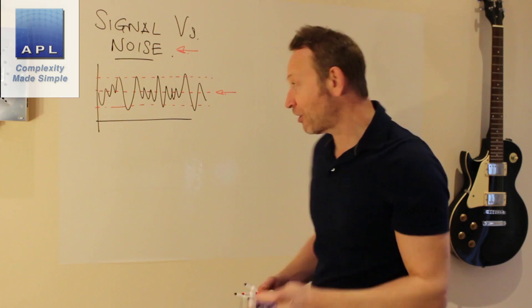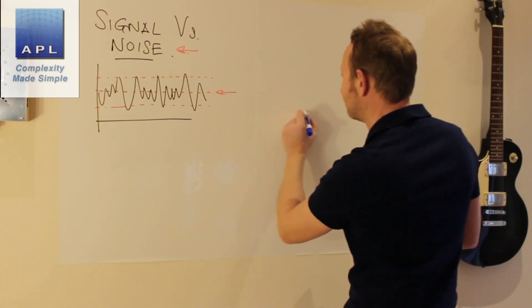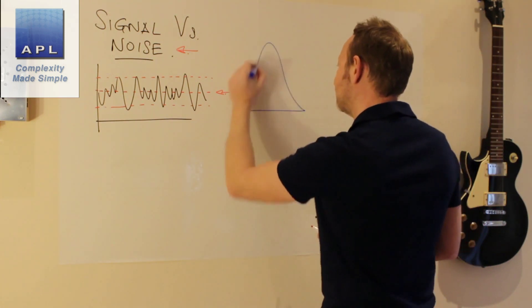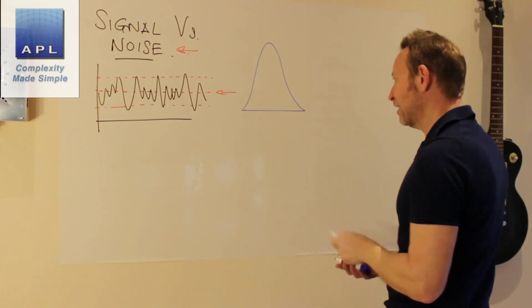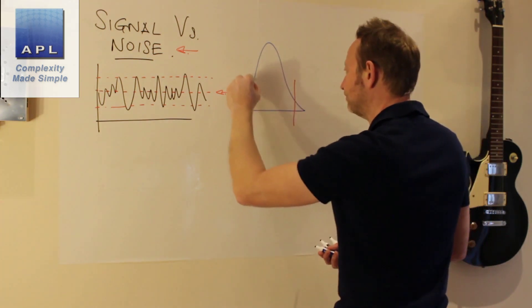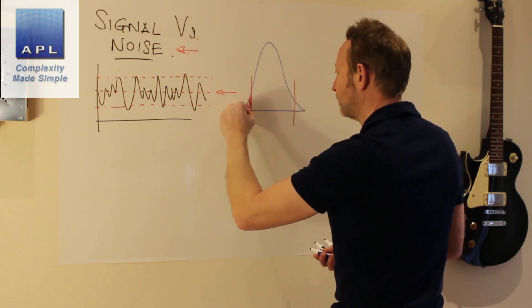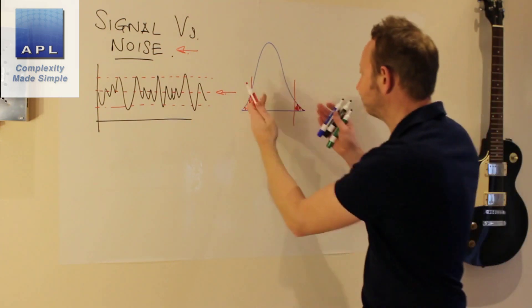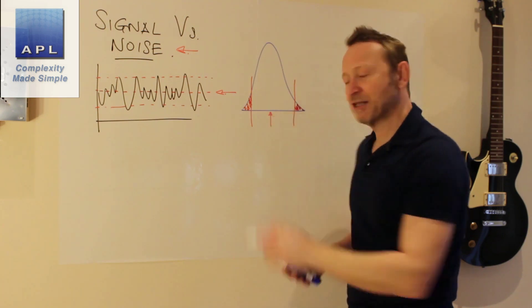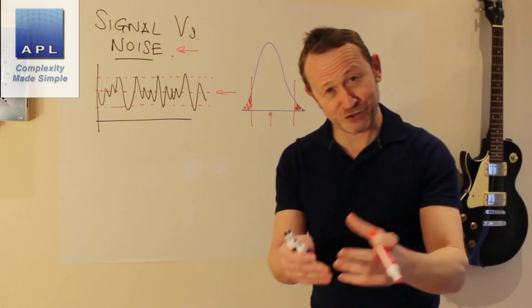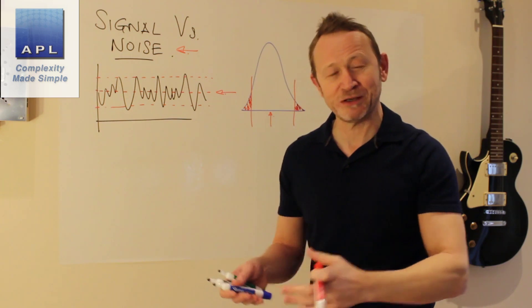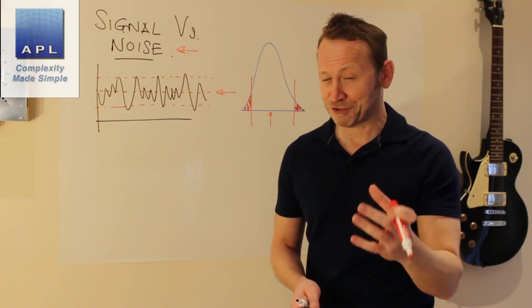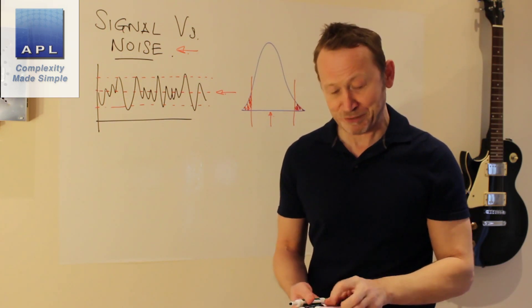If I draw that in a slightly different way, let's draw that as a distribution. What's it going to look like? It's going to look like sitting in the right place, but I've got defects to the bottom, defects to the top. And to be honest, there is nothing the operator can do about this.